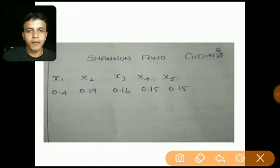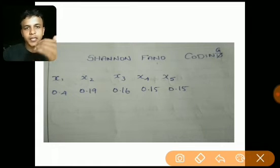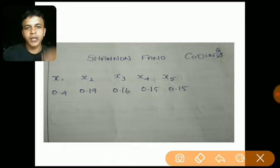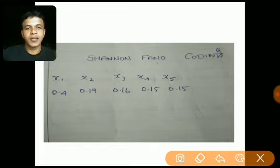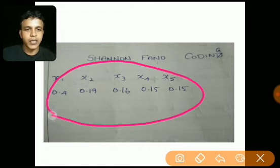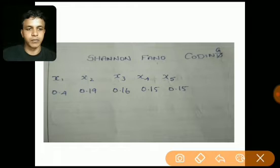The first step in Shannon-Fano coding to generate a codeword is to arrange the symbols either in increasing or decreasing probability order. Here the symbols are already in decreasing probability, so I am not going to make any change in the first step.